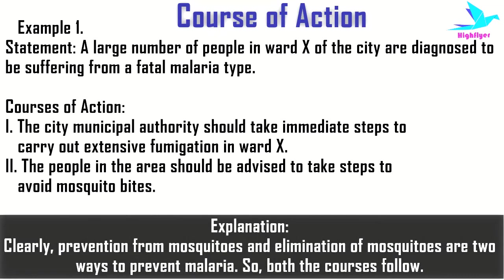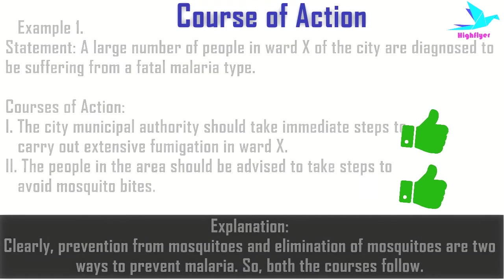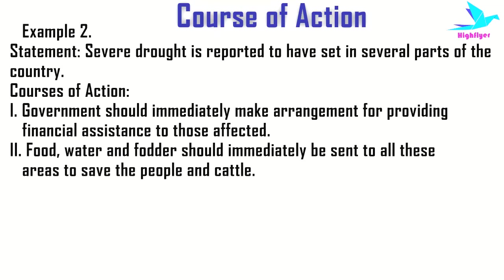Clearly, prevention from mosquitoes and elimination of mosquitoes are two ways to prevent malaria, and here both these points are given by the first and the second course of action. So here, both courses of action one and two will follow.